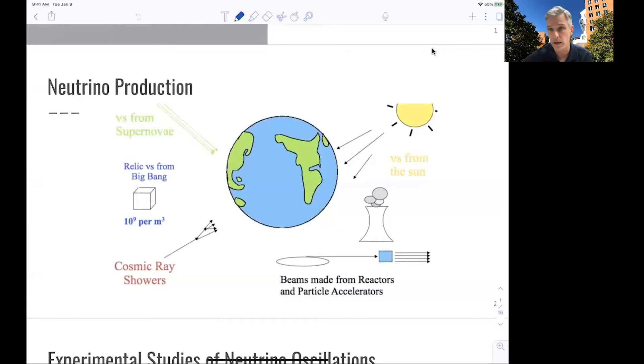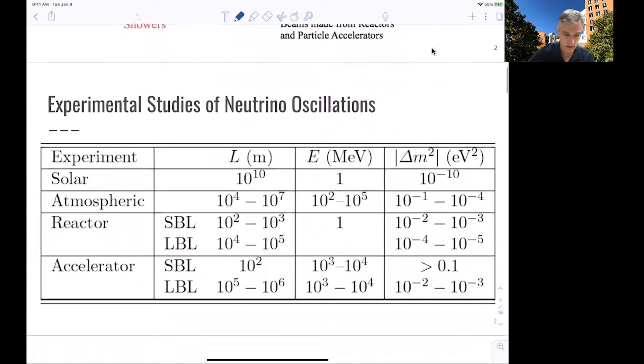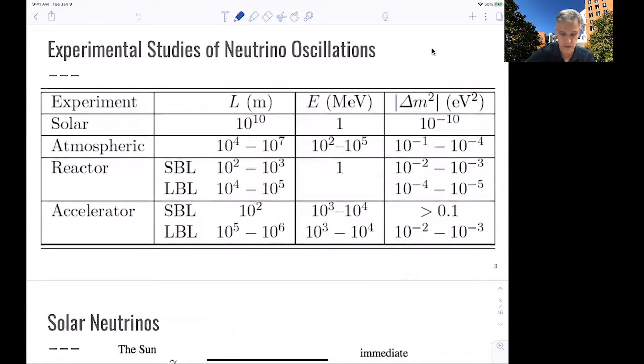By the way, neutrinos can also be used in order to monitor the nuclear activity around the globe. Okay, studies of neutrino oscillation. So we can make this table here and ask ourselves, what kind of experimental parameters are the length, the energy, and the sensitivity to a specific mass range?